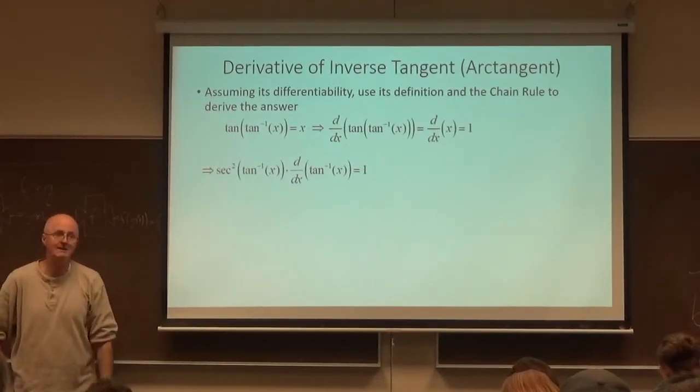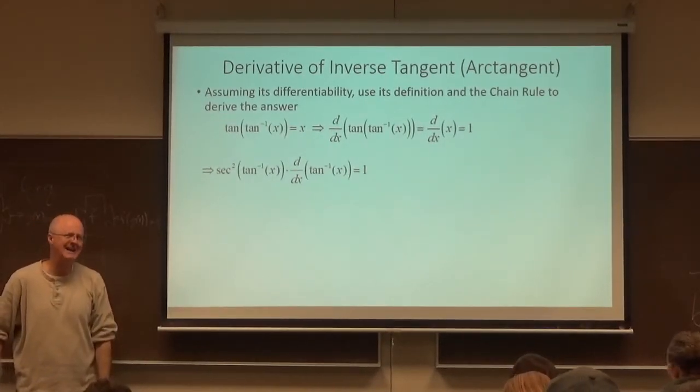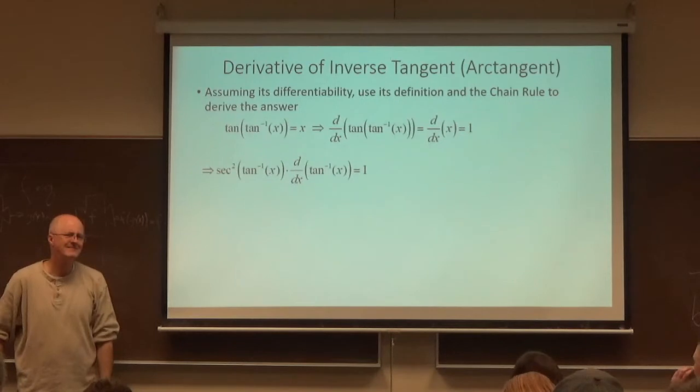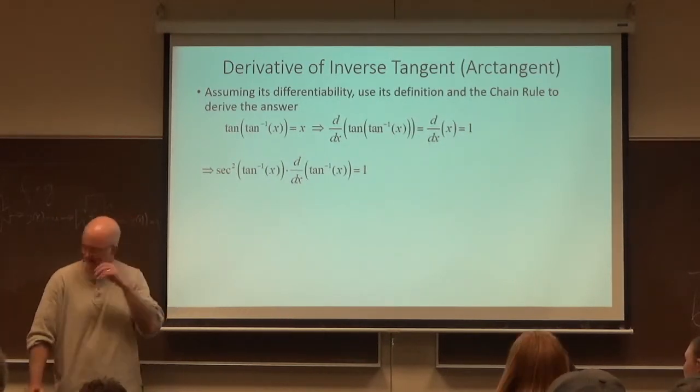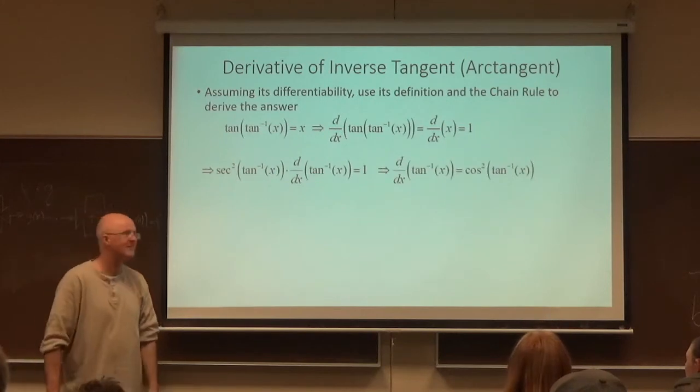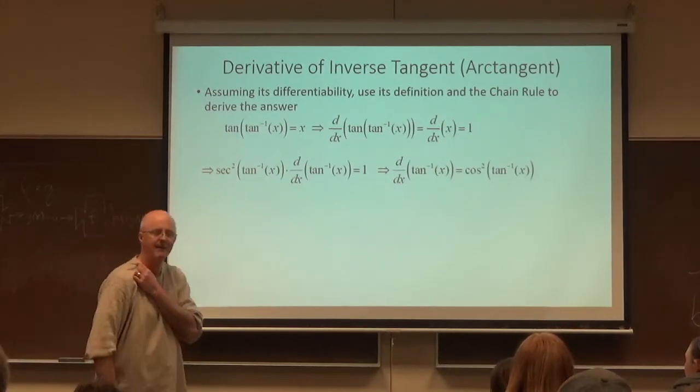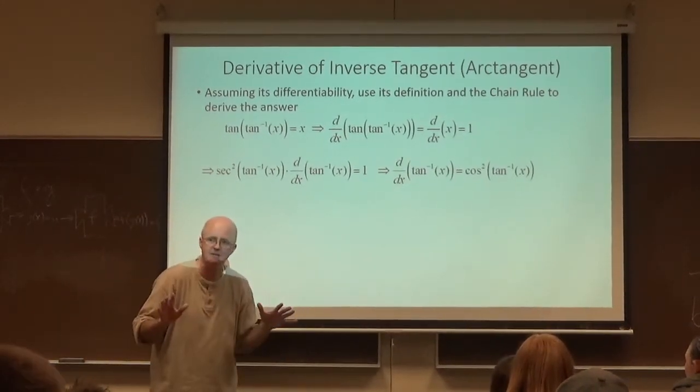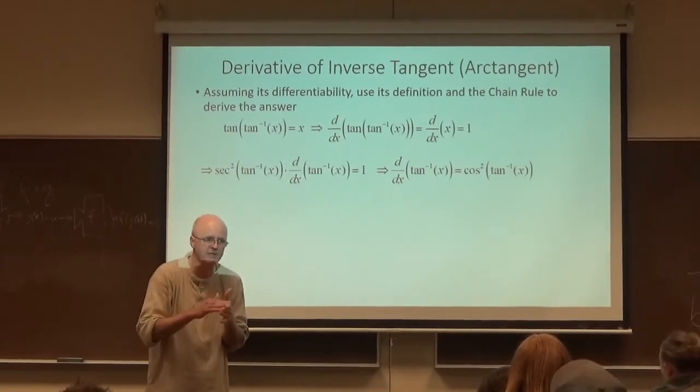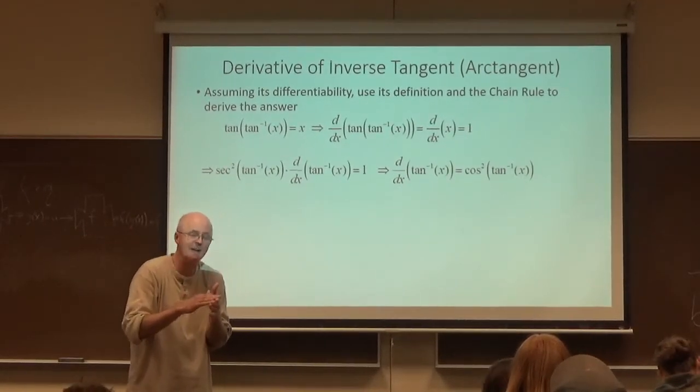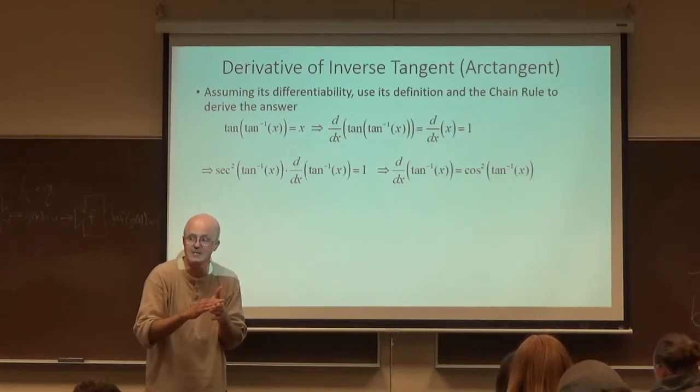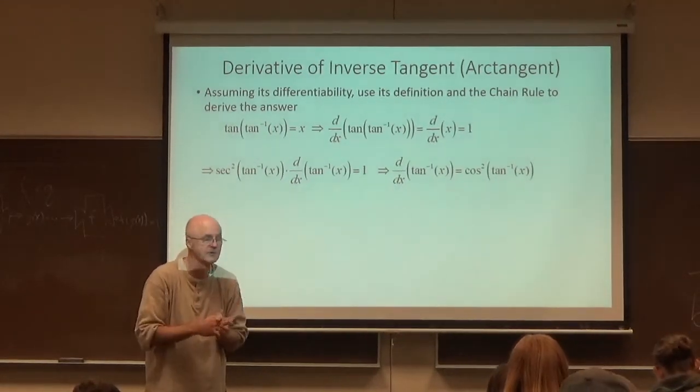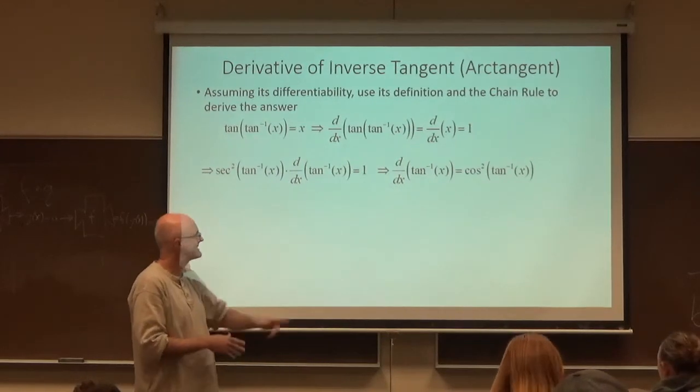When you divide by secant squared, it's the same as multiplying both sides by what? Cosine squared. So cosine comes in seemingly by magic. It's not magic. Secant is defined to be 1 over cosine. So if I divide both sides by secant, I'm really multiplying both sides by cosine. And that happens with their squares, too. So I guess that's the answer. And it is the answer.